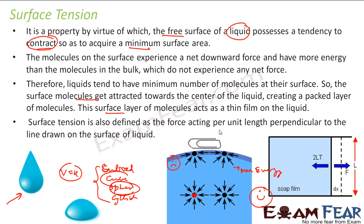Surface tension can also be defined as a force acting per unit length perpendicular to the line drawn on the surface of the liquid. If I have a soap film with a movable rod and apply some force to move the film by distance x, the liquid has two films — one on each side — so the change in area will be L into 2. That force per unit length is the surface tension.